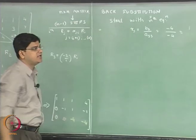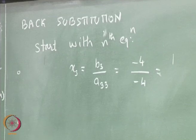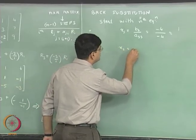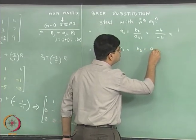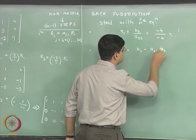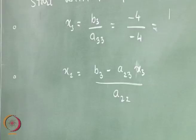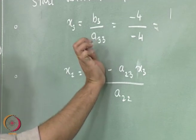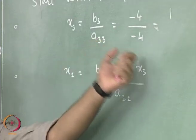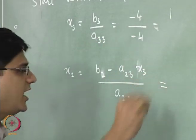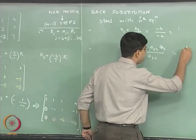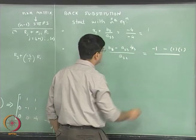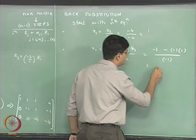The second step in back substitution is to use the n-1th equation to get x_{n-1}. Our x_2 is given by the equation a_23 x_2 plus a_23 x_3 equals b_2. We take the a_23 x_3 term to the right-hand side and divide by a_22, giving us minus 1 minus 1 multiplied by 1, divided by a_22 which is minus 1. That is minus 2 divided by minus 1, which equals 2.